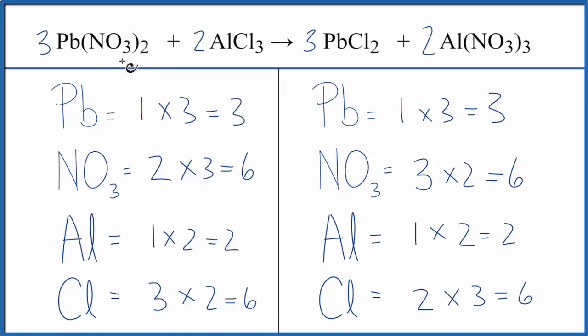When you have these polyatomic ions, like nitrate here, on both sides, count them as one item. Makes the balancing much easier and less prone to error. This is Dr. B with the balanced equation for lead 2 nitrate plus aluminum chloride. Thanks for watching.